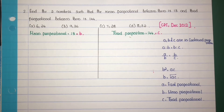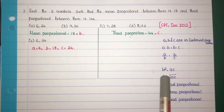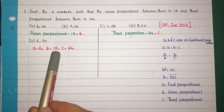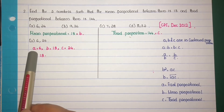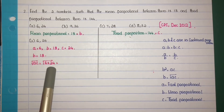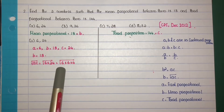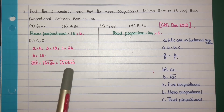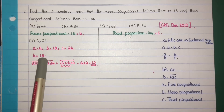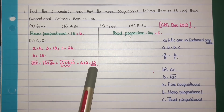For the first option, substitute A equals 6 and C equals 24. Then B equals root of AC, or check if B squared equals AC. B is equal to 18, and root of AC equals root of 6 times 24. Now 24 is 6 times 4, so root of 6 times 6 times 4 equals root of 36 times 4. Root of 36 is 6 and root of 4 is 2, so 6 times 2 equals 12. Therefore B equals 18 but root AC equals 12.